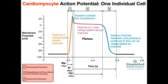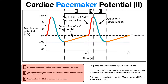So you have to pay close attention to what you're talking about and what context. Here we're talking about the electrical conduction system of the heart, and the pacemaker of that in normal people is the sinoatrial node. So let's talk about the pacemaker potential. Here's the action potential diagram.